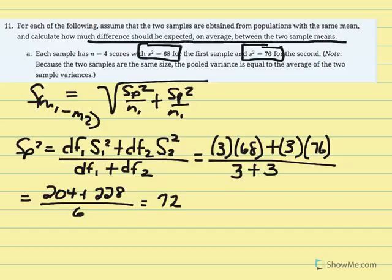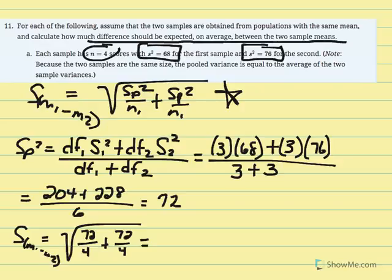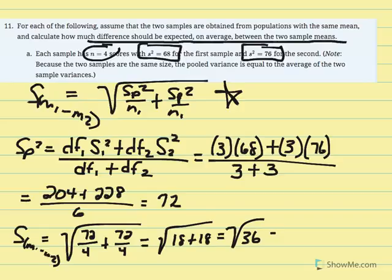Now we use that to calculate our estimated standard error of the mean difference. The equation is: square root of pooled variance over n1 plus pooled variance over n2. Replacing variables: 72 over 4 plus 72 over 4. Taking them as separate fractions, 72 divided by 4 equals 18. So 18 plus 18 equals 36. The square root of 36 is 6.